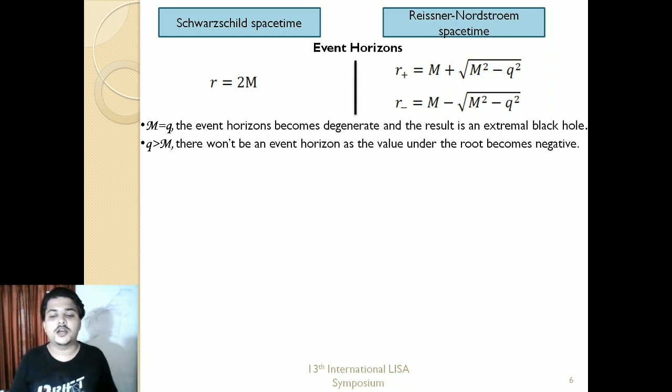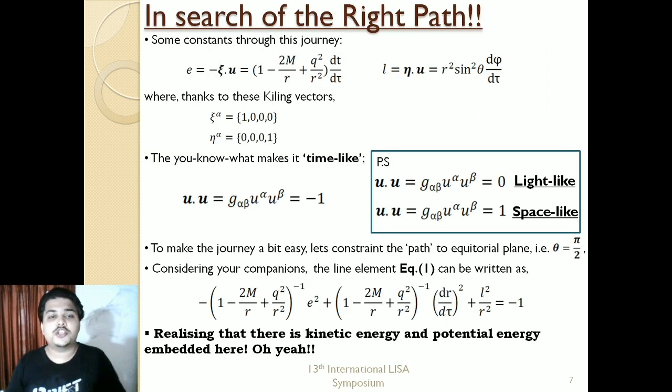For this presentation we will be focusing on the geodesics. To determine the geodesic, we will be using a bit of help from the constants of this journey: the energy of the particle, the angular momentum of the particle, and thanks to the Killing vectors which help us derive these two constants. The Killing vectors are basically the constants along the geodesic. Then we have the timelike geodesic condition, that is the scalar product of the four velocity equals negative one.